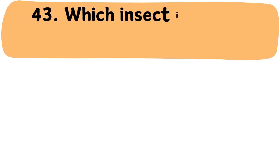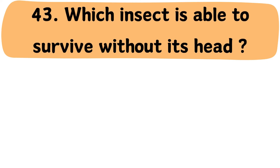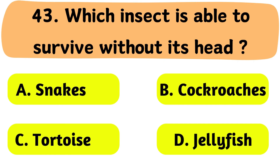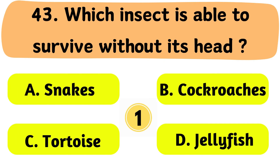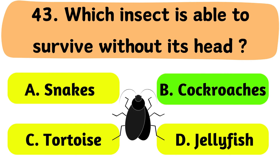Question No. 43: Which insect is able to survive without its head? A. Snakes. B. Cockroaches. C. Tortoise. D. Jellyfish. The correct answer is Option B: Cockroaches.